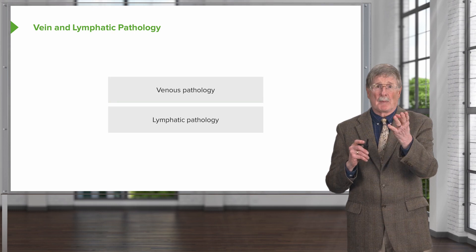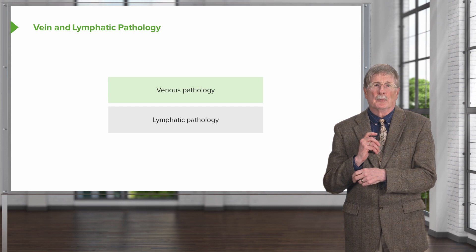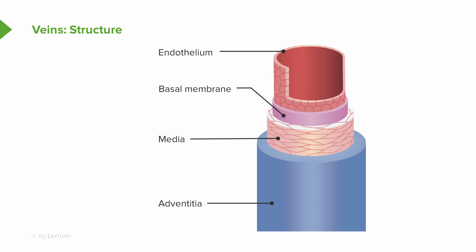Welcome back. We are now going to talk about vein and lymphatic pathology. We kind of lumped them together — they are different entities with different manifestations and different importance, but we're going to put them together to make one very nice package. Here's the roadmap: we're going to talk about vein pathology first and then lymphatic pathology second, and we're off and running.